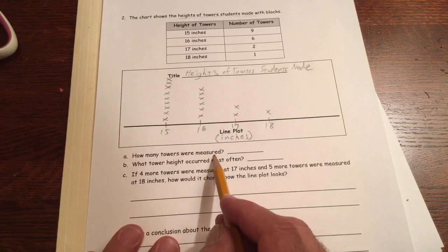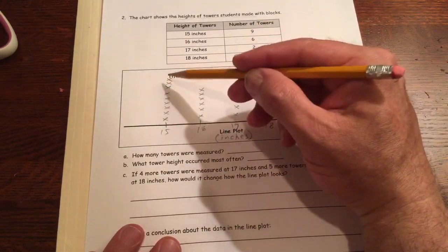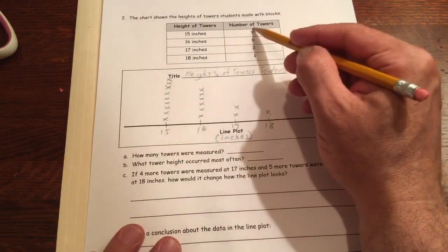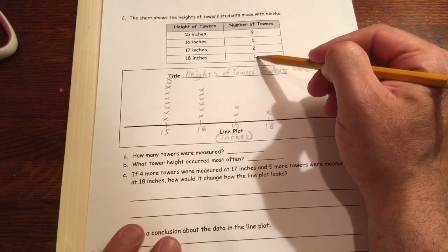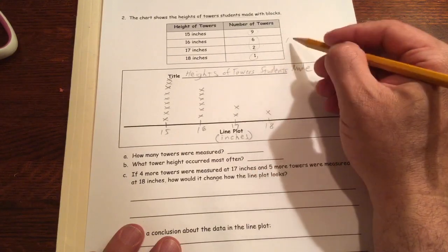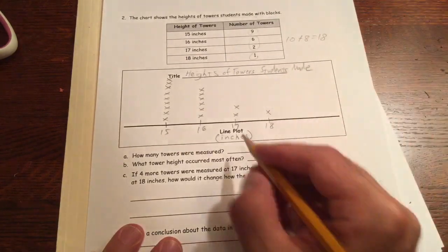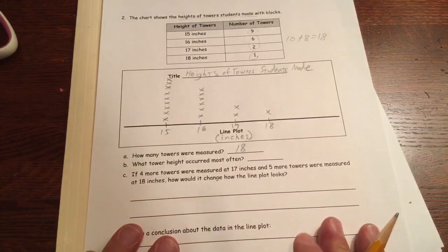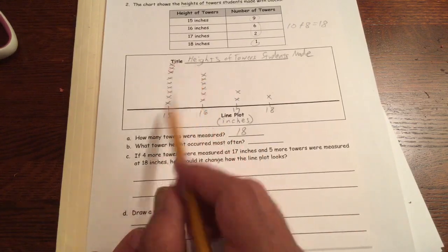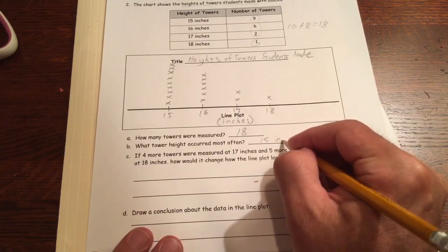How many towers were measured? We could just look at the table and add, we could count all the x's, or we could look at the table and see if there's some easy numbers to add. I've got a nine and a one right here, so there's a 10. And that six and two makes an eight. So I'm looking at 10 plus eight, which is 18. So there are 18 towers. What tower height occurred the most often? That's the tallest one, 15 inches. Don't forget the units.